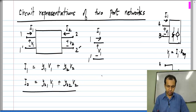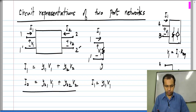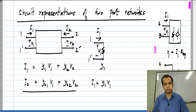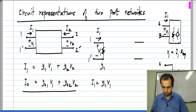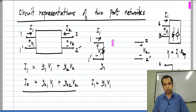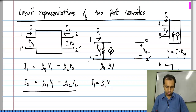Clearly, if we had just I1 equals Y11·V1, that would correspond to a conductance or resistance. So if we have a conductance of value Y11 placed across V1, it will draw a current Y11·V1. Now the second part is Y12·V2. There is a current drawn in port 1 in response to a voltage in port 2, so this is clearly a dependent source — a voltage-controlled current source whose value is Y12·V2.